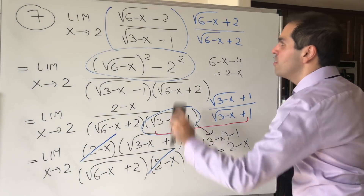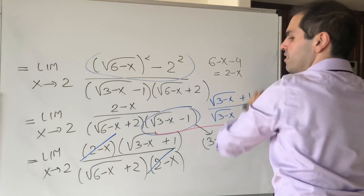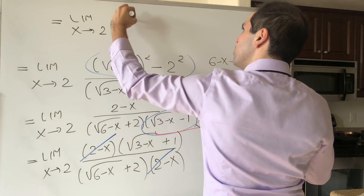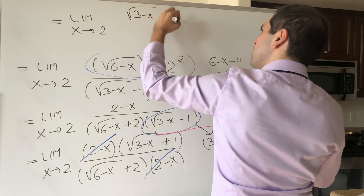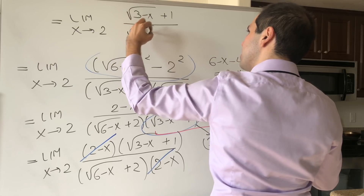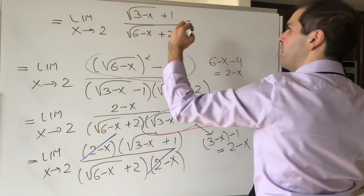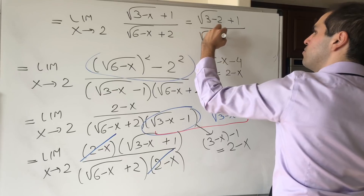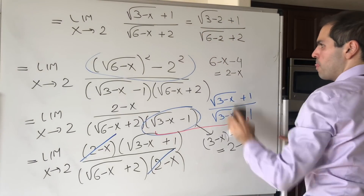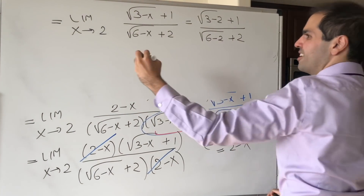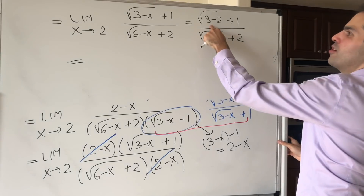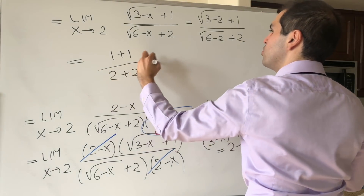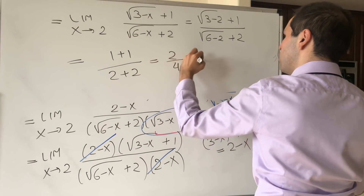After cancellation, you're left with the limit as x→2 of (√(3−x) + 1)/(√(6−x) + 2). Plugging in x = 2: (√1 + 1)/(√4 + 2) = 2/4 = 1/2. With square roots, always think conjugate form.